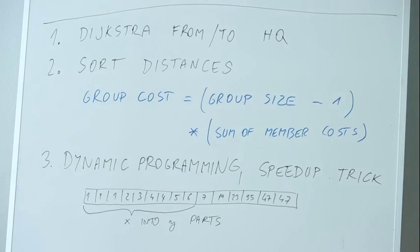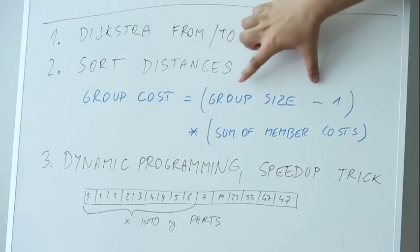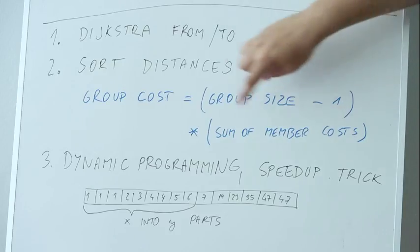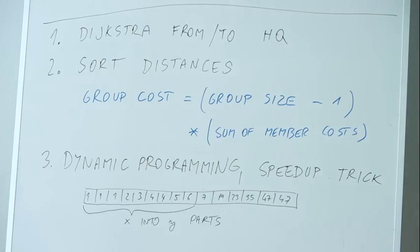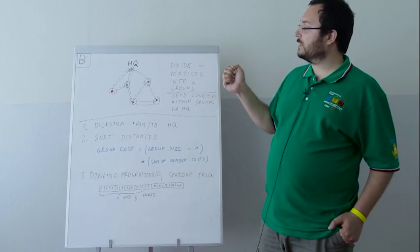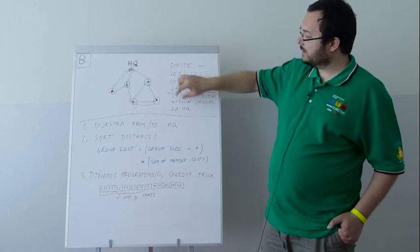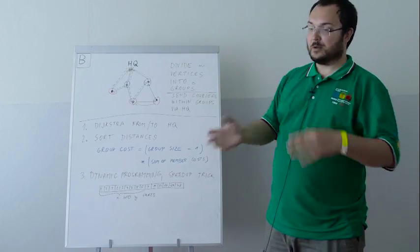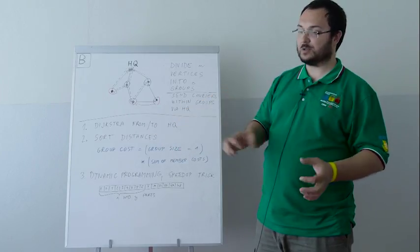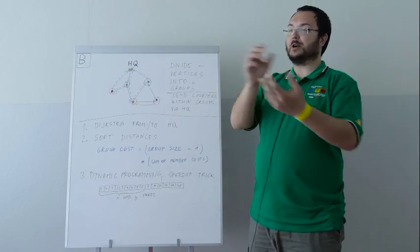The blue formula: we take the group size minus one, times the sum of the costs — the distances computed in step one. Why? Because if there are three red vertices, each of them has to send a message to two other vertices. So for each vertex, there will be incoming and outgoing messages, and we sum this over the entire group. From this formula we can see it never pays to place a more expensive vertex — one with larger distances — into a larger group. We always want the largest group to contain vertices with the smallest costs, because otherwise we could switch them around and get a better solution.